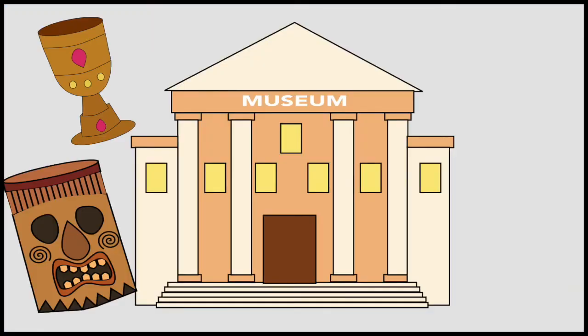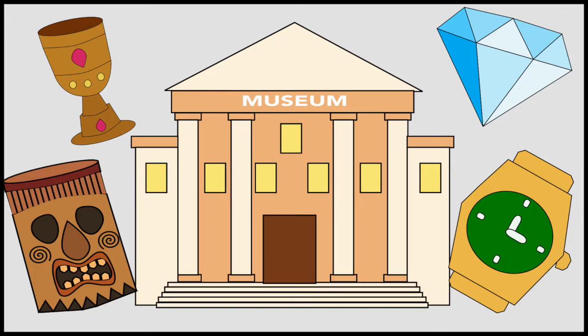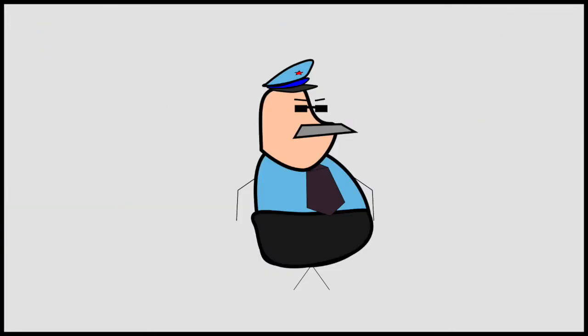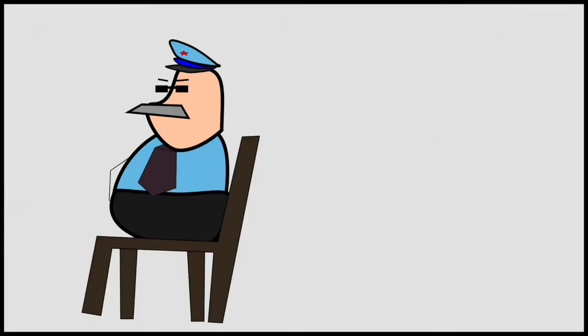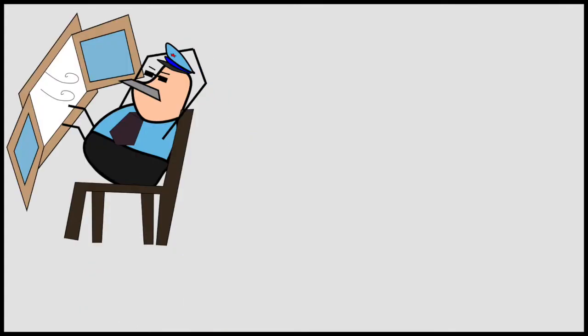Imagine a museum with cool and expensive artifacts. It is guarded by a security. The security sits on the left side near a window where he enjoys the breeze. The left region has more ventilation so he prefers sitting over there.